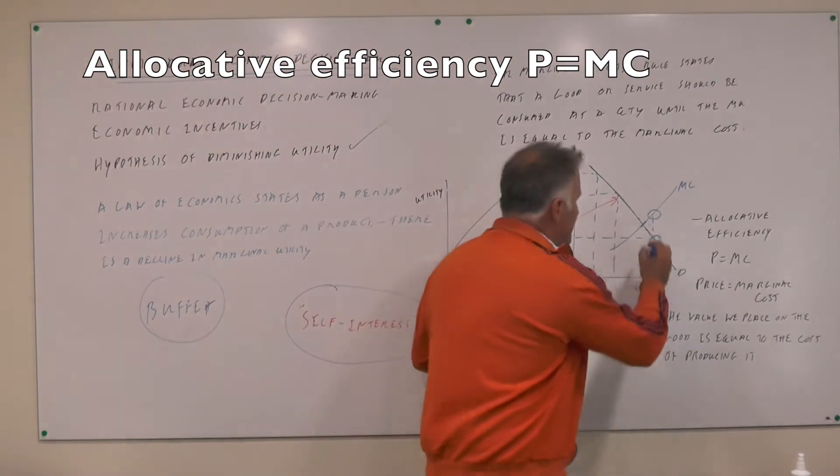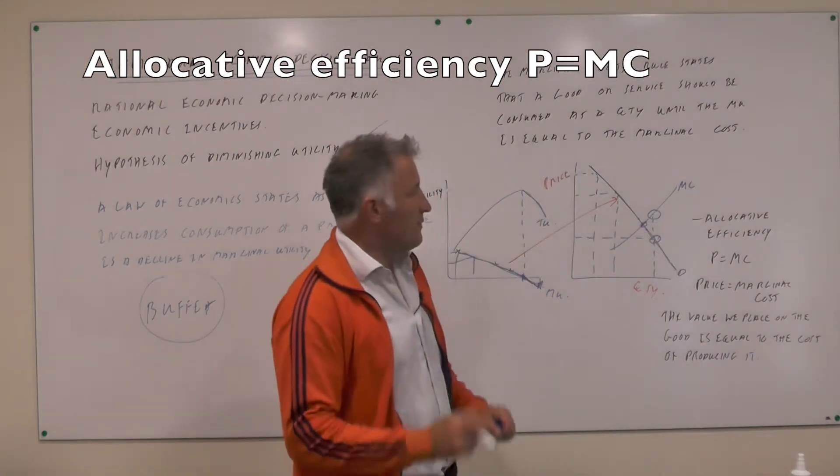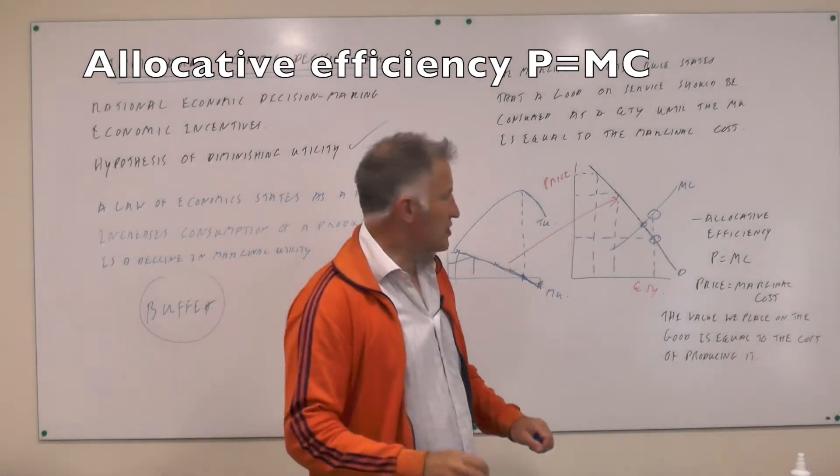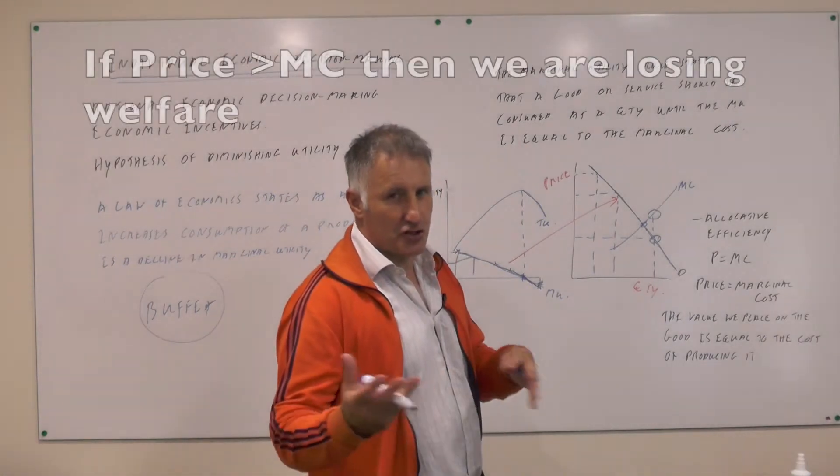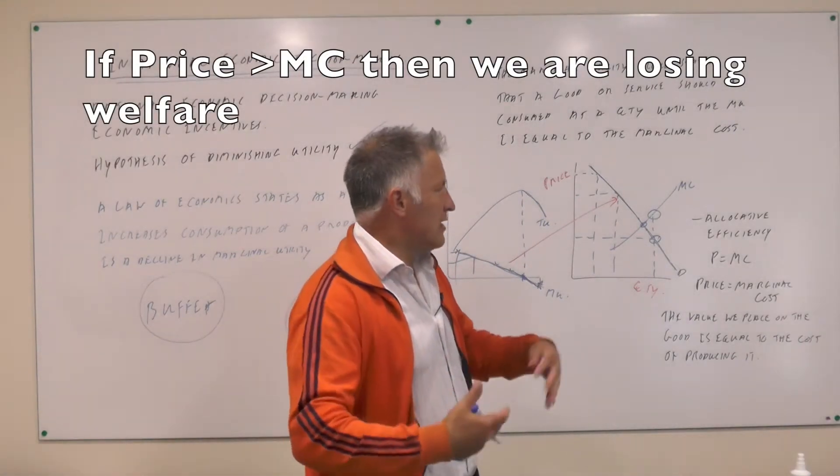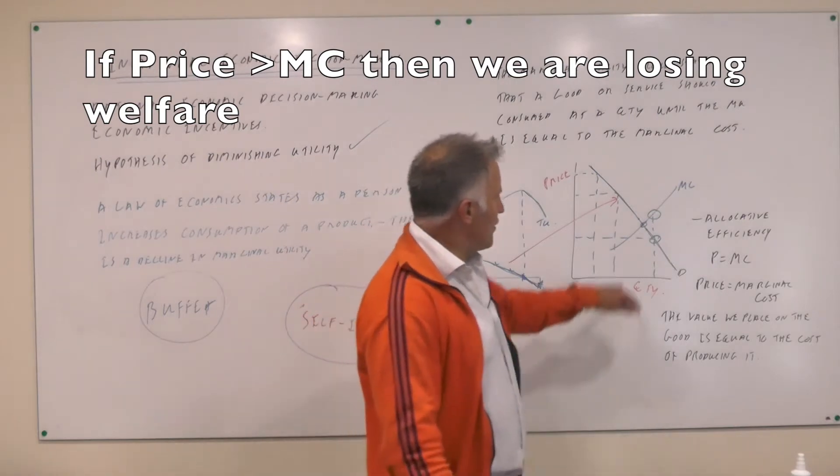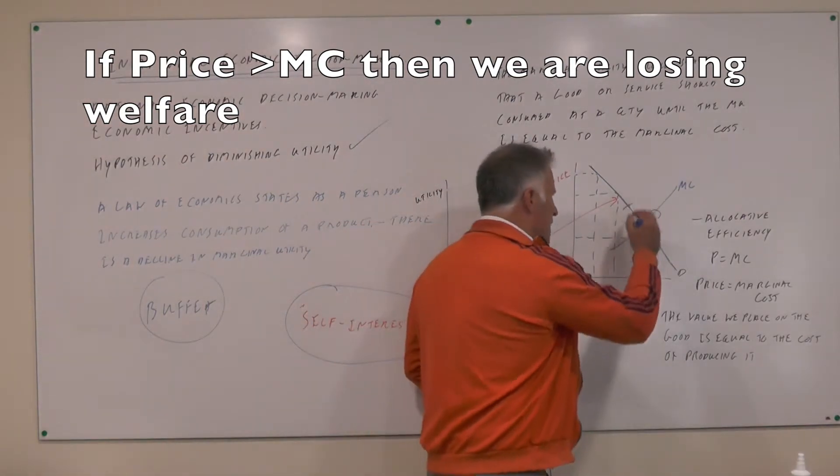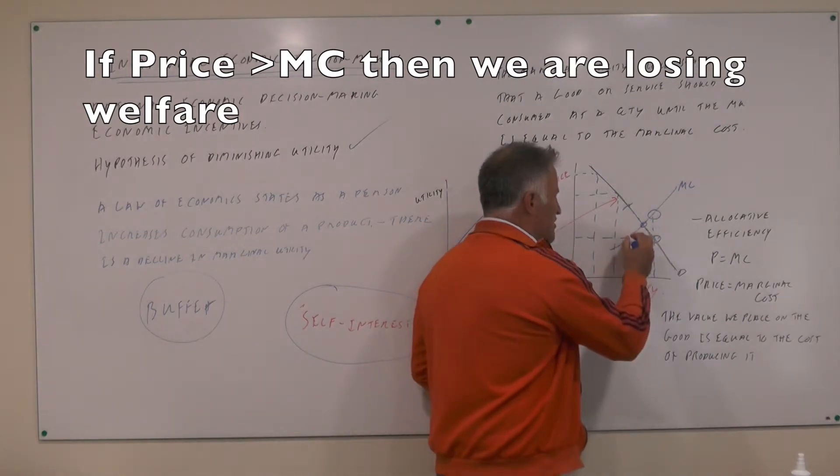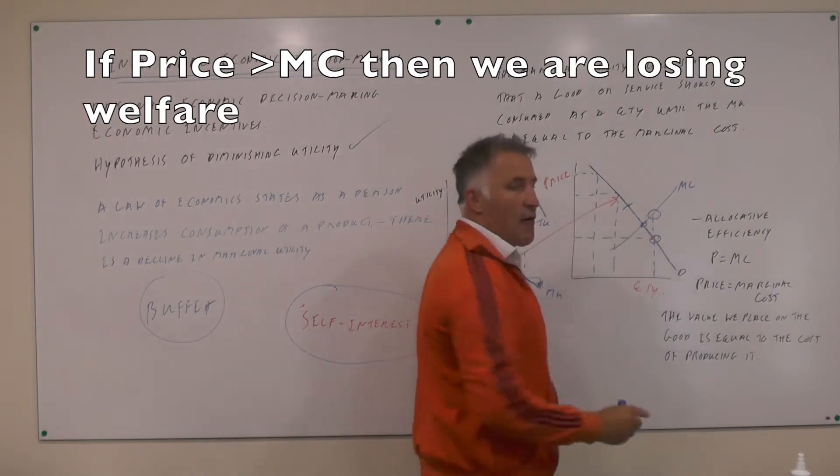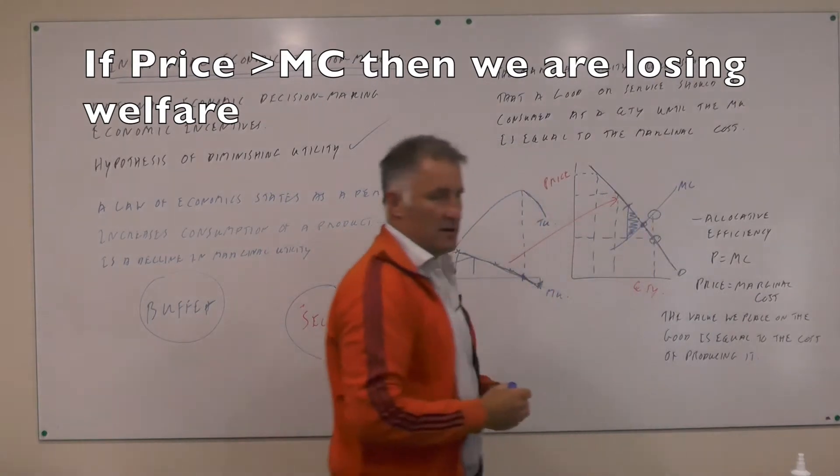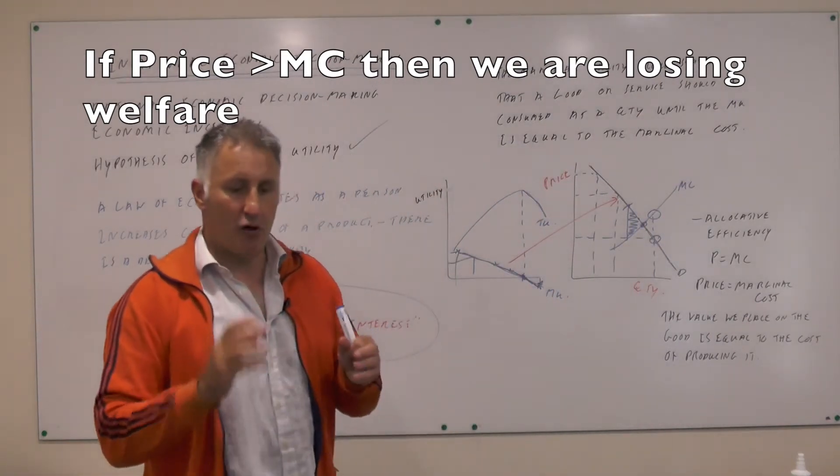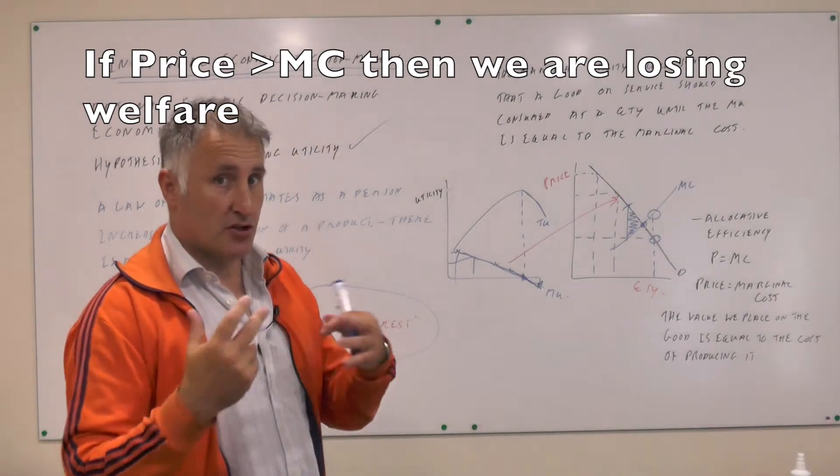So we always want to get to this point, where price is equal to marginal cost. The value that we place on the good is equal to the cost of producing it. But if we are beyond this point, you'd say it's better to be here because the value that we place on the good is greater than the cost of producing it. However, if we are there, then we lose all of this extra utility by moving to that point. So we want to get to the point where price equals marginal cost because that is the point where we can maximize our efficiency.